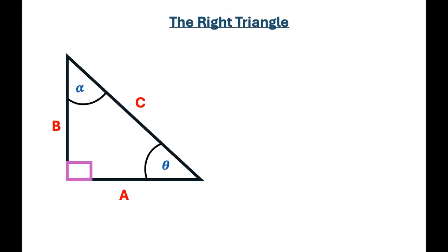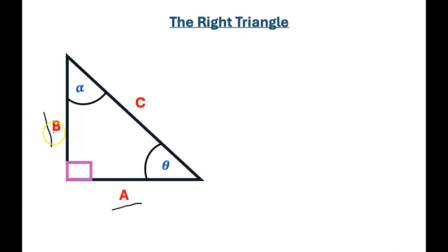A right triangle is a triangle in which two of its sides are perpendicular to each other. We have a triangle here on the left side of the screen, and we can see that two of its sides are perpendicular — that is side A and side B. This forms a right angle of 90 degrees, which makes this triangle a right triangle.